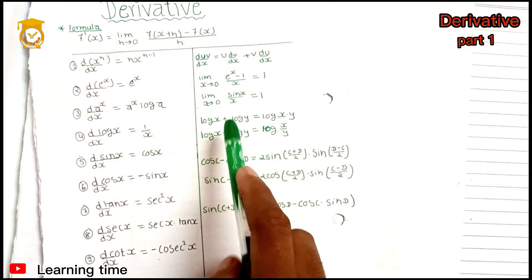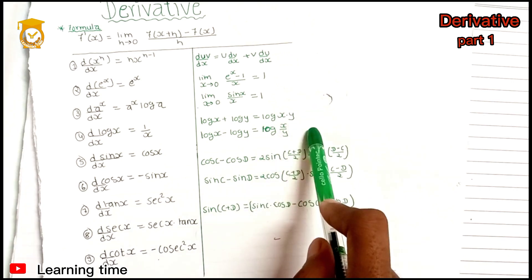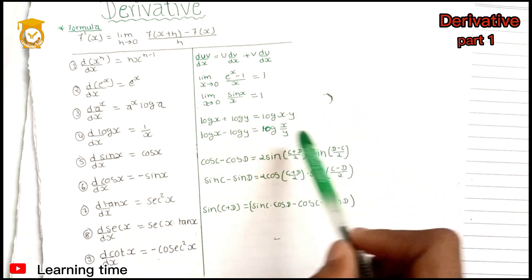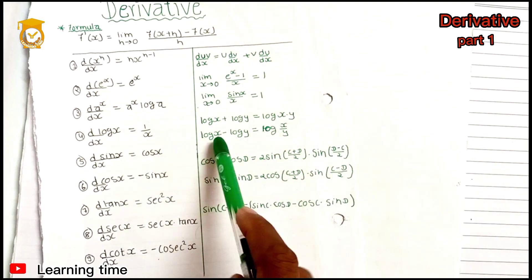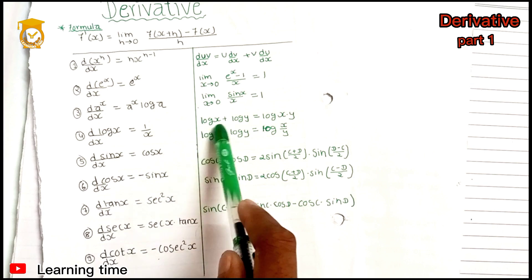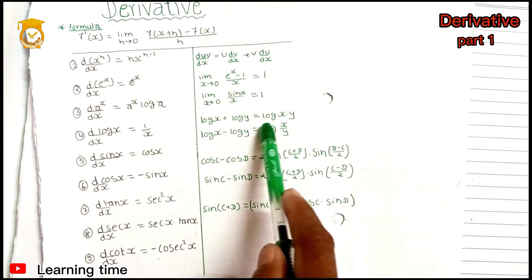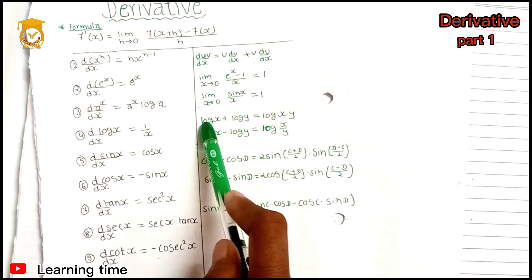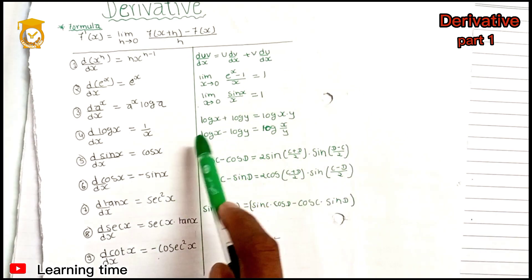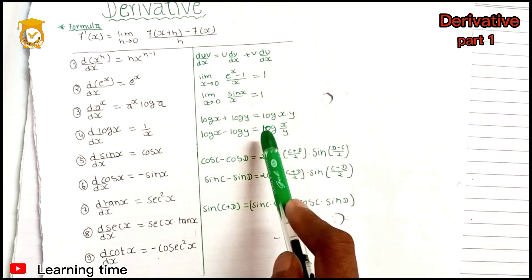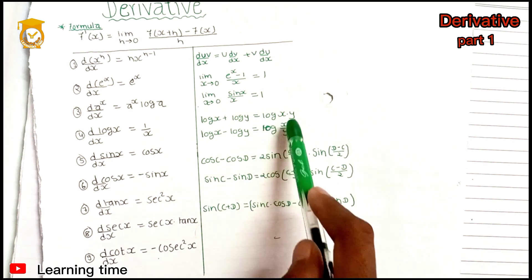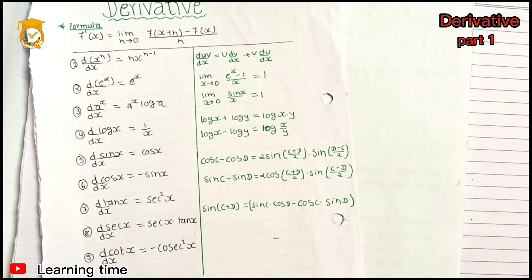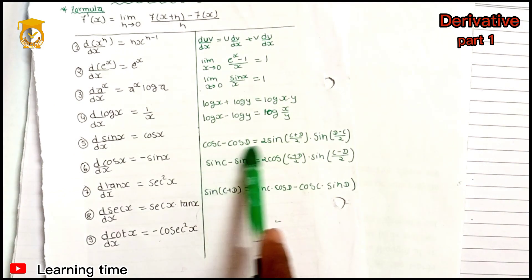The log property is important in this chapter. Log x plus log y is equal to log of (x into y). And log x minus log y is equal to log of (x divided by y). So log x minus log y equals log (x by y).